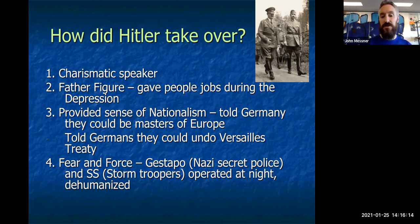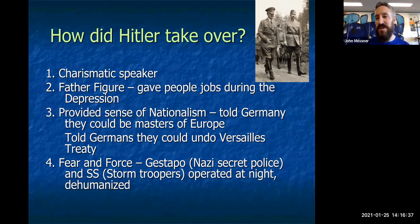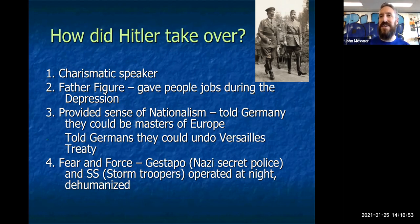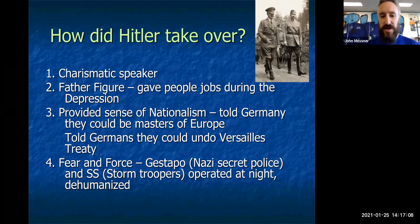Hitler essentially said, 'I'm going to undo the terms of the Treaty of Versailles, which have been so crippling to us.' For those who wouldn't agree with him once he came to power, he used the Gestapo — the Nazi secret police — and the SS stormtroopers, who would come at night and get you if you spoke out against the Nazis. It's kind of like getting dropped from social media platforms if you say something they don't like — very authoritarian, not allowing people freedom of speech.